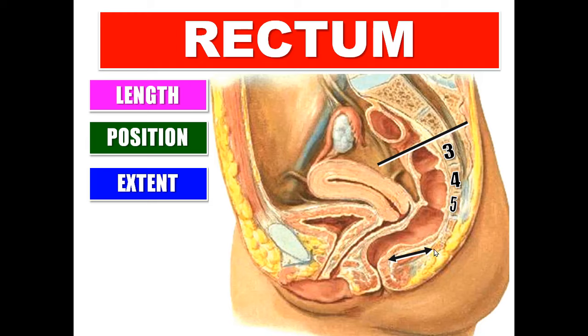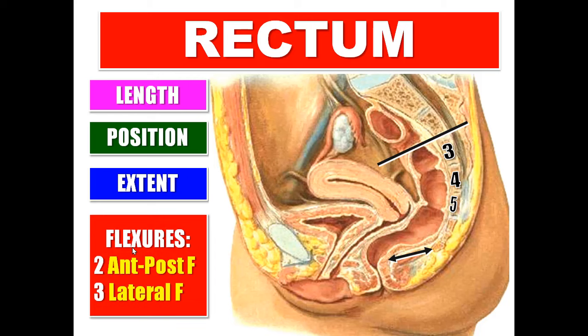Regarding flexures, we have two types: anteroposterior and lateral. The two anteroposterior flexures are the sacral flexure, which follows the concavity of the sacrum, and the perineal flexure at the recto-anal angle.